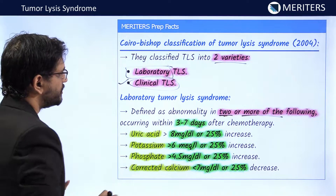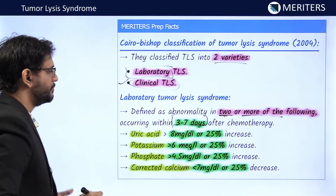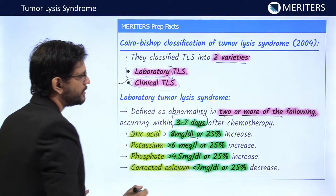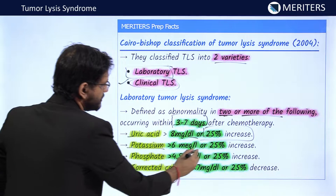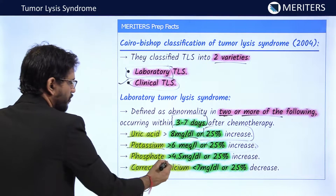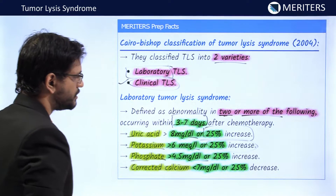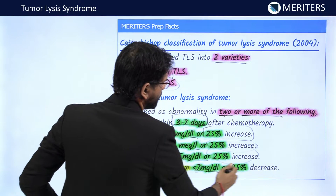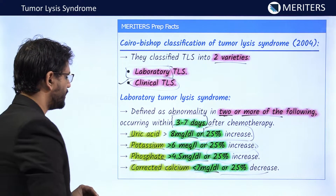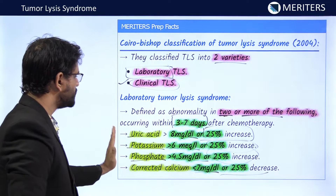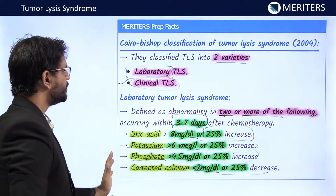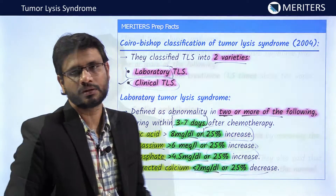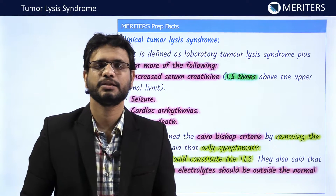The laboratory TLS criteria are: uric acid ≥8 mg/dL or 25% increase; potassium >6 mEq/L or 25% increase; phosphate ≥4.5 mg/dL or 25% increase; and corrected calcium <7 mg/dL or 25% decrease. If two or more of these four criteria are met, it is classified as positive laboratory TLS.